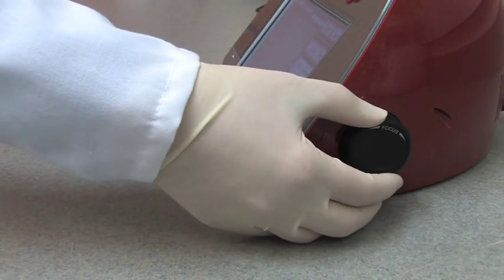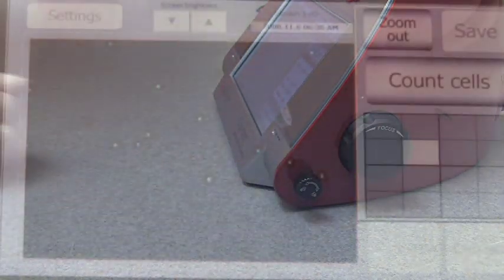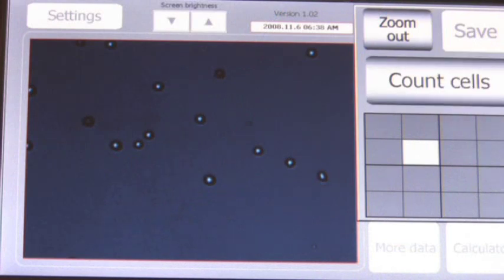Once the image is correctly adjusted, you may lock the focusing using the focus lock knob. Press the count cells button to obtain your results.